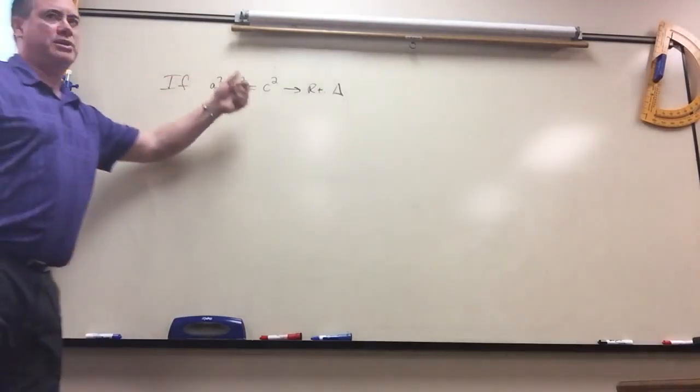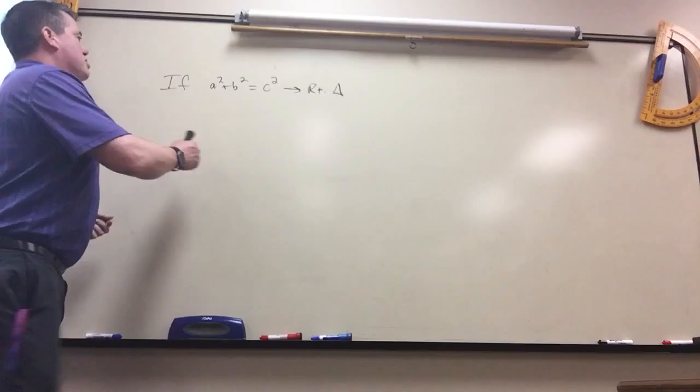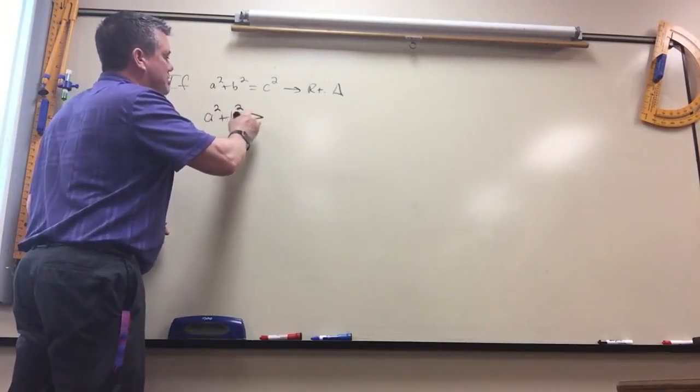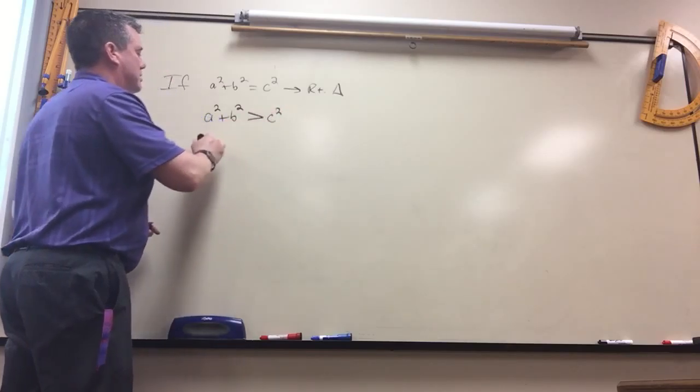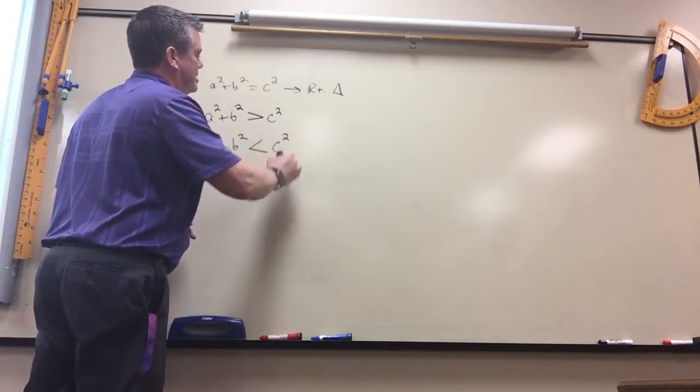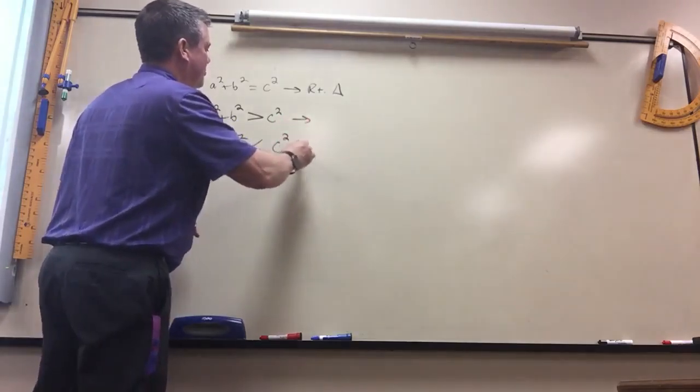If it's not equal, it's one or the other. So if a squared plus b squared, sometimes it'll be greater than c squared, sometimes it'll be less than c squared. Greater than acute.